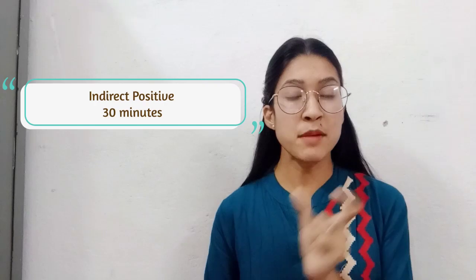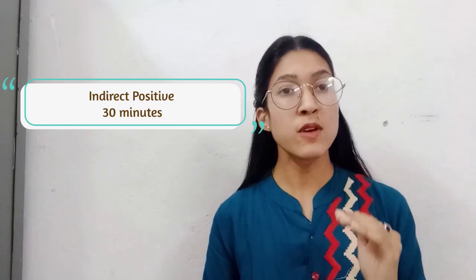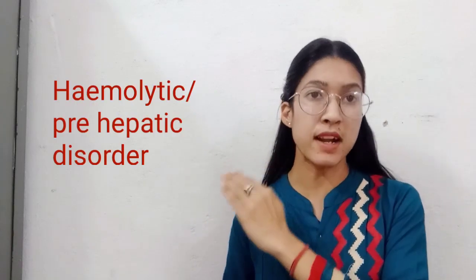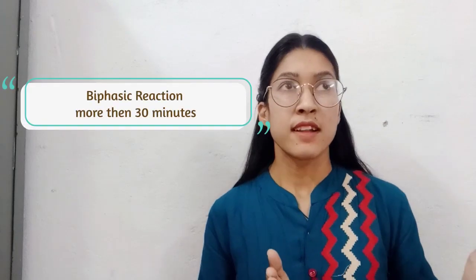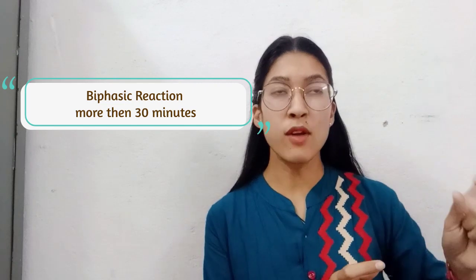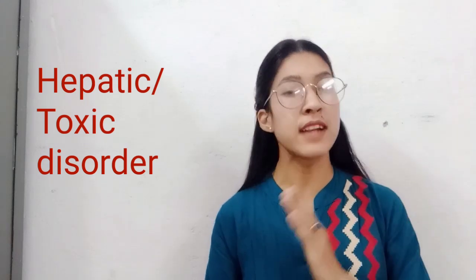If the reaction occurs at 30 minutes, this is an indirect positive reaction, meaning there is increased unconjugated bilirubin in the serum, indicating a hemolytic or pre-hepatic disorder. If the reaction is biphasic — meaning it takes time initially, but when we add methanol or alcohol the purple color becomes darker — this indicates both unconjugated and conjugated bilirubin are present in the blood serum. This biphasic result indicates a hepatic type of disorder.